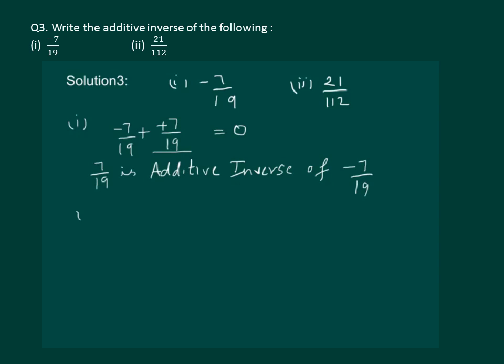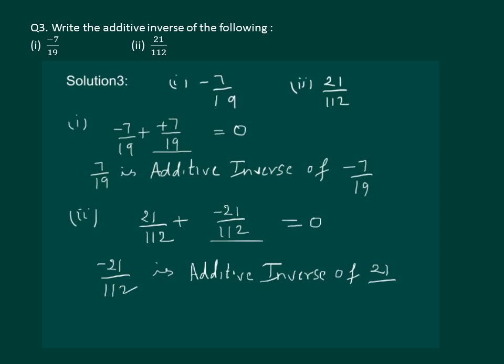Now, let us do the second part. Again, to find additive inverse means what should be added to 21/112 to get 0. So, clearly, -21/112. So, we can write that -21/112 is additive inverse of 21/112.